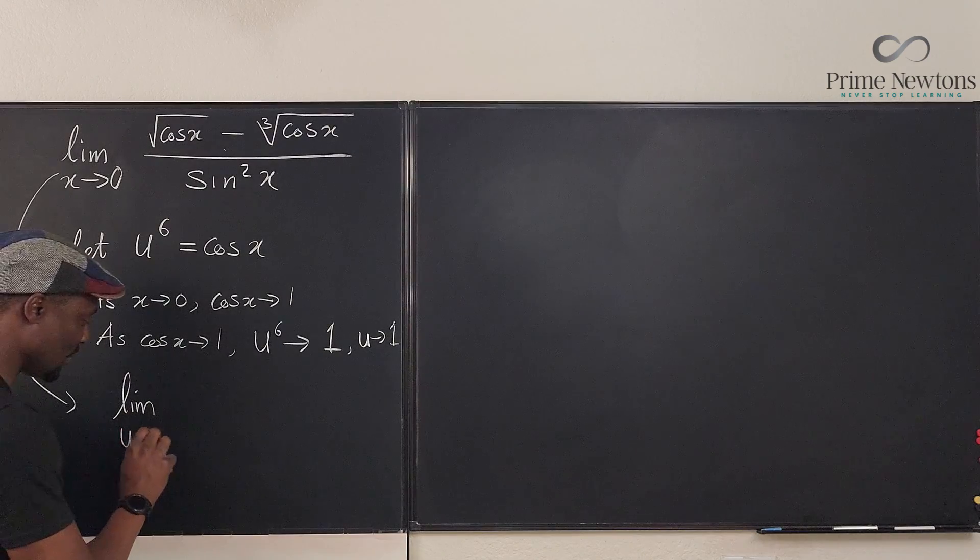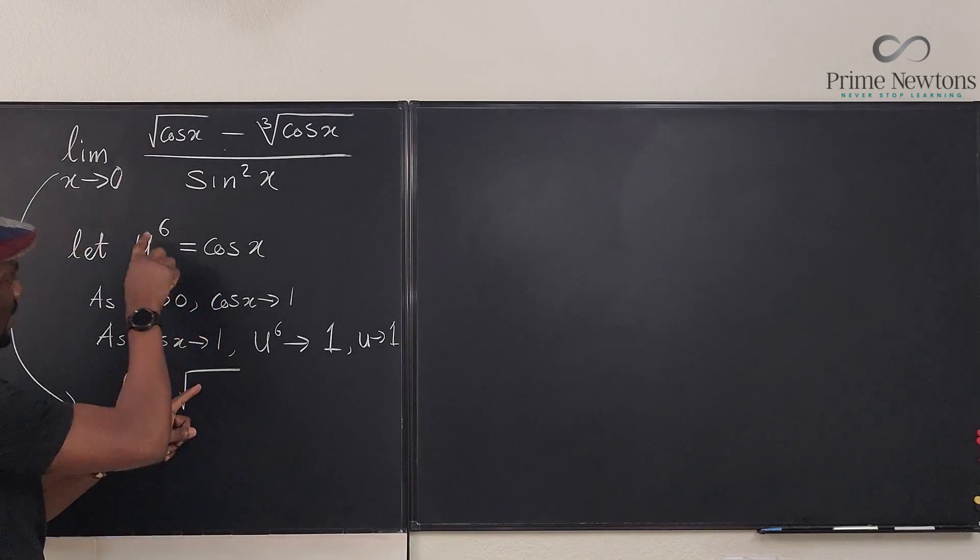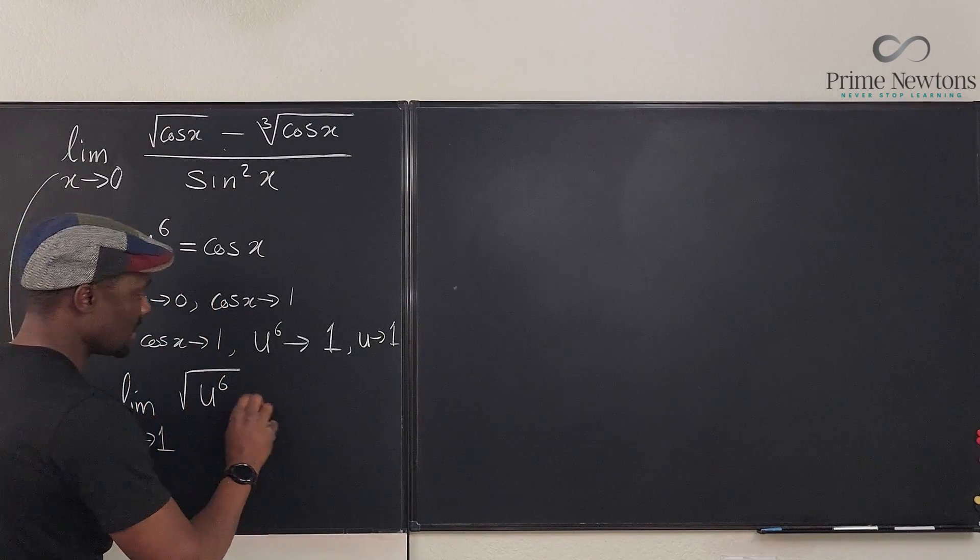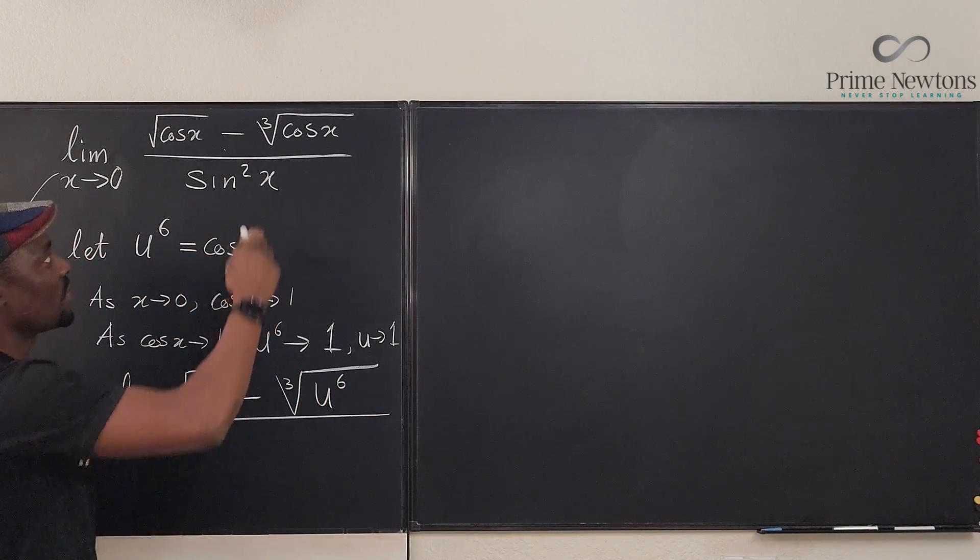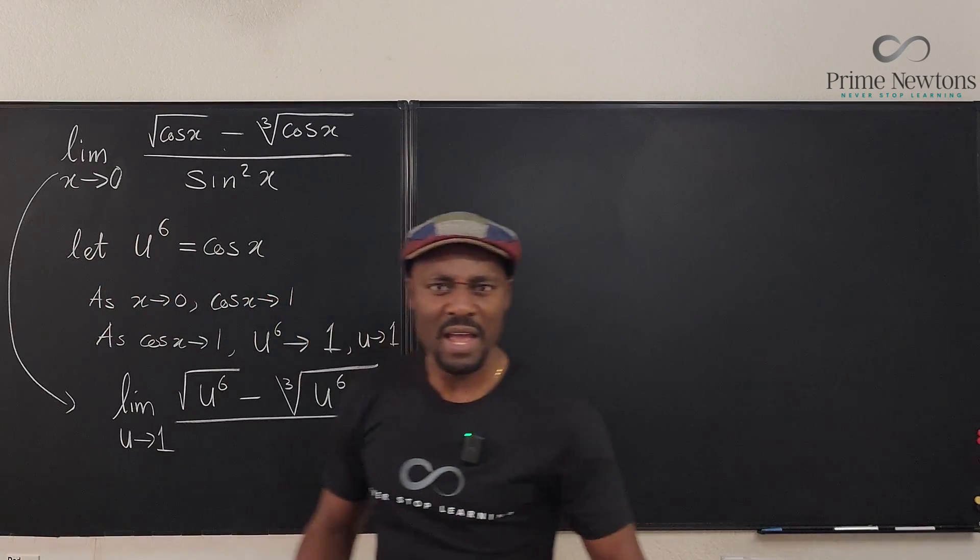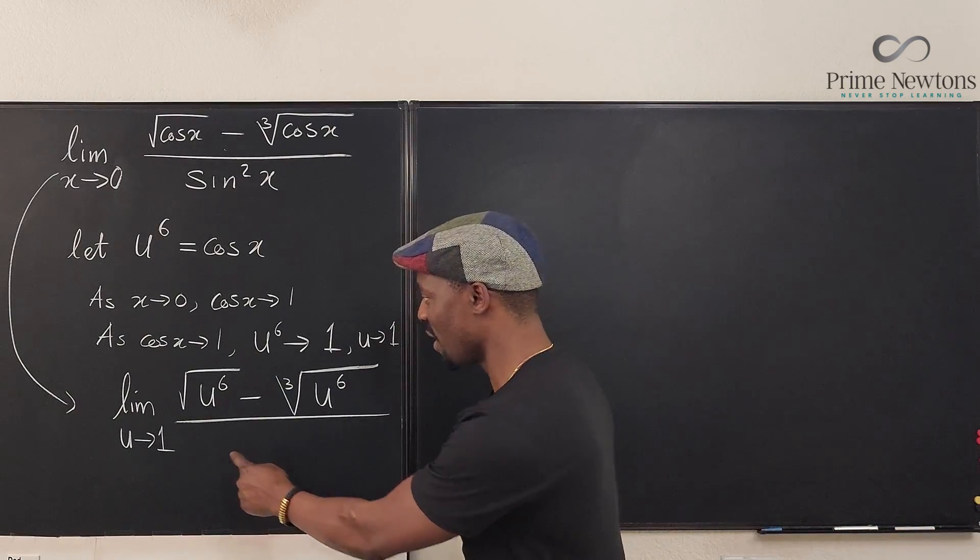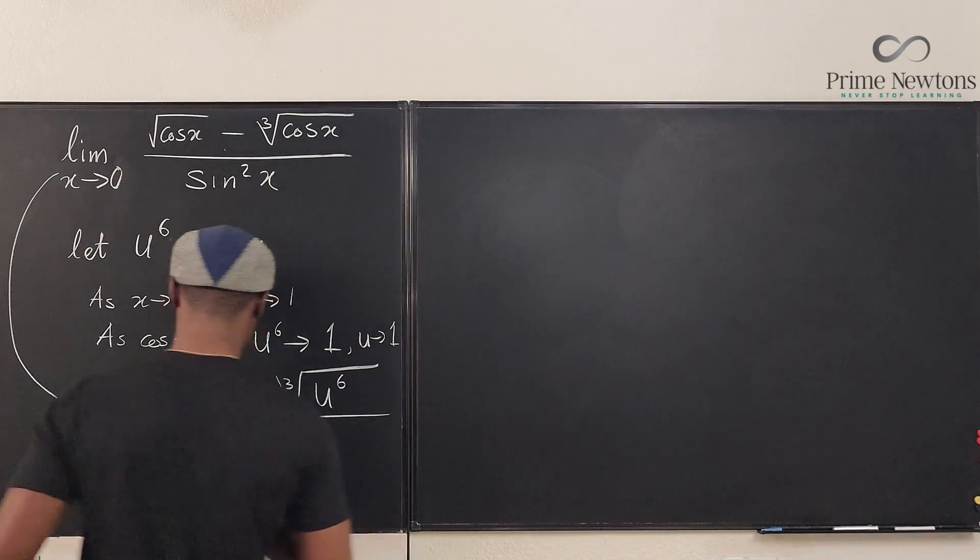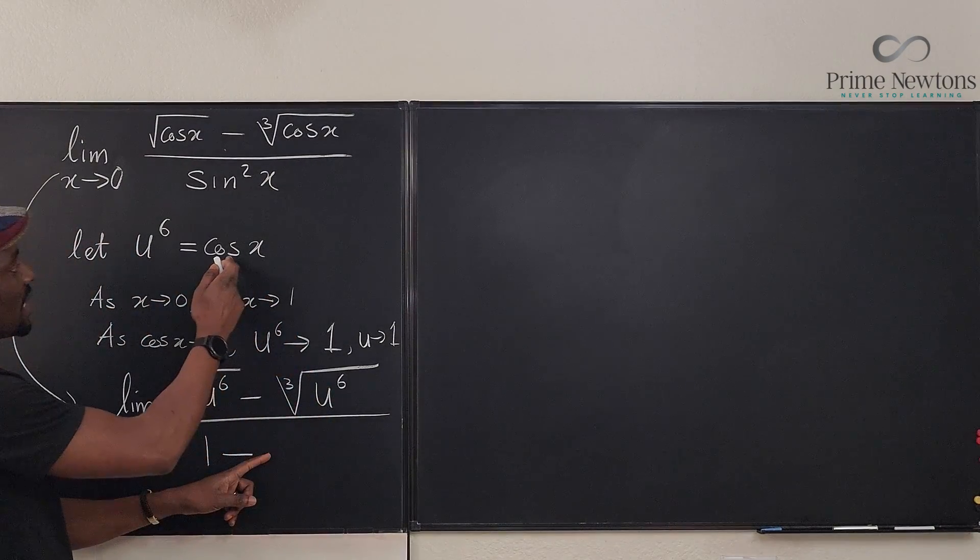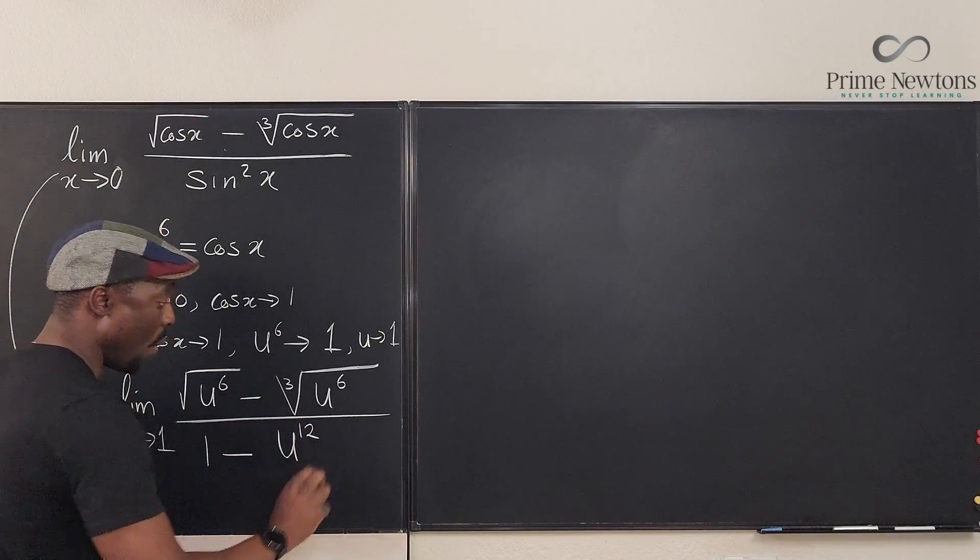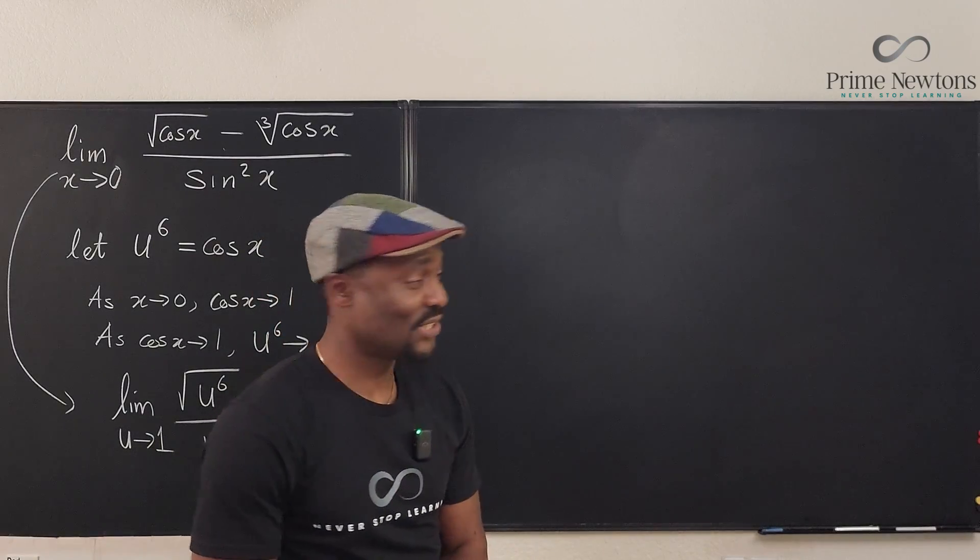I've got the limit as u goes to one of the top part will now be the square root of what was cosine x again. We said it's going to be u to the sixth minus the cube root of u to the sixth divided by, oh, I forgot to rewrite this. What is sine squared x? Sine squared x is one minus cosine squared x from our trig class. So we're going to write one minus cosine squared x. It's going to be one minus the square of cosine, but cosine is u to the sixth, so it's going to be u to the 12. So you're going to say, how does this make my life easy? I'm going to show you. Makes your life a lot easier.